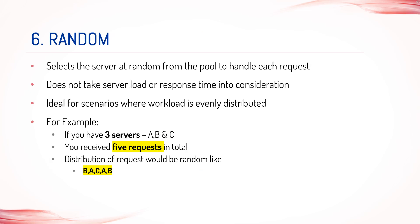6. Random. The random algorithm selects a server at random from the pool to handle each request. It's a simple algorithm that doesn't take server load or response time into consideration, making it ideal for scenarios where the workload is evenly distributed across servers. For example, if you have three servers A, B, and C and you receive five requests in total, the random algorithm would distribute the requests in a random order as shown.